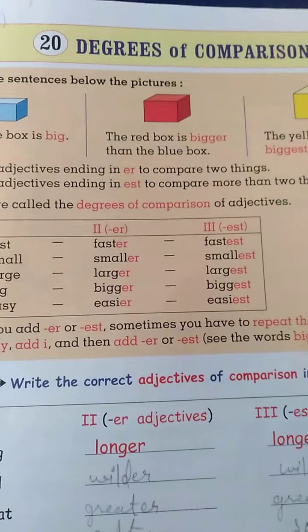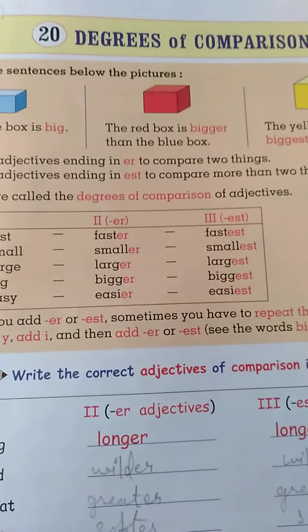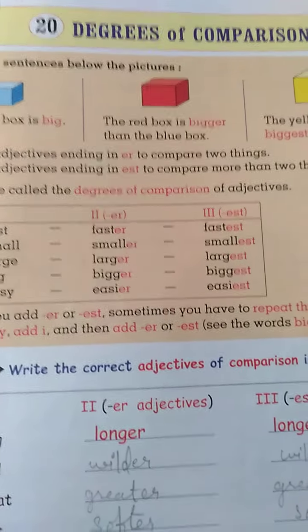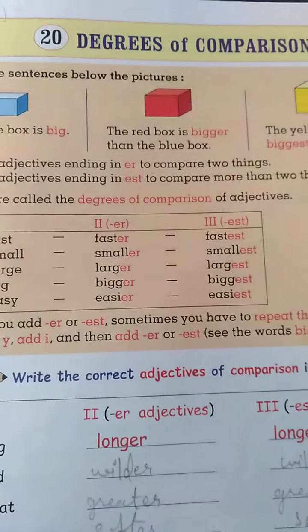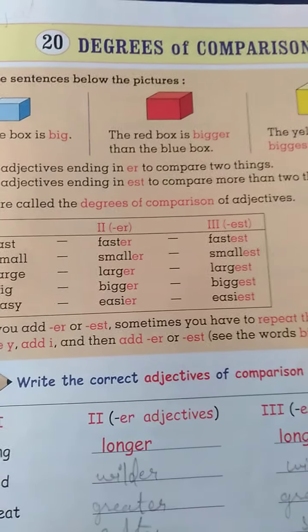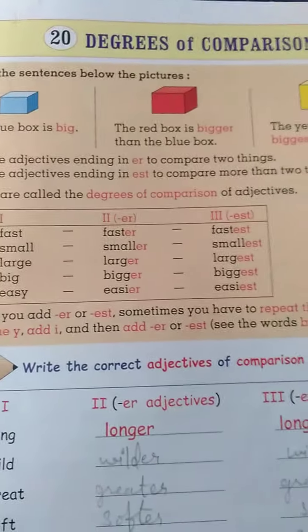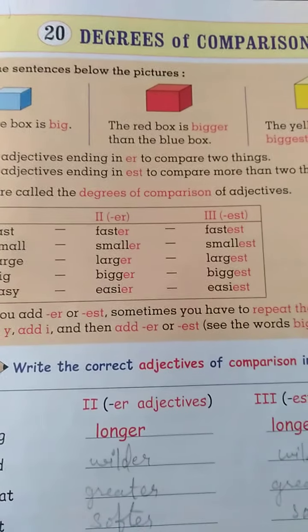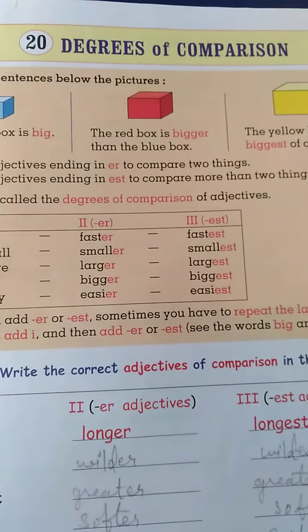Hello everyone, this is your English teacher from Welkin National School. Today we are going to learn English grammar from Standard 4. See lesson number 20: Degrees of Comparison.